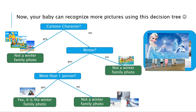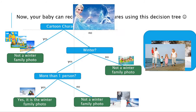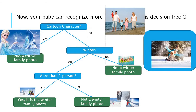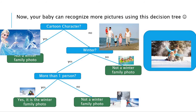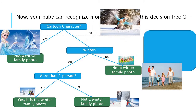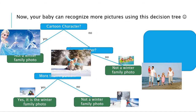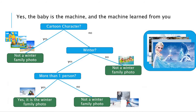Now your baby can recognize more pictures using this decision tree. If we give it Elsa, your baby says this is a cartoon, so it's not a family photo. If you give this other photo, your baby checks — it's not a cartoon character, but it's not winter, so it's not a winter vacation photo. And if your baby takes this photo, it's not a cartoon, it's winter, and it has more than one person, so your baby says this is our family vacation photo.